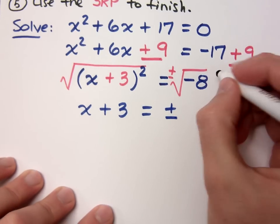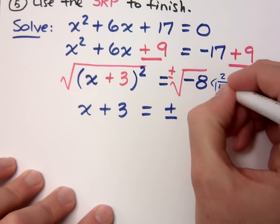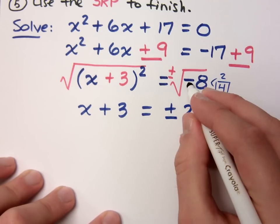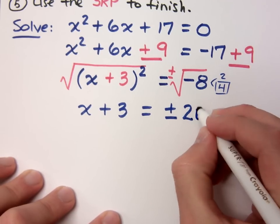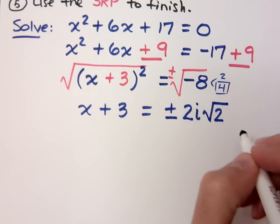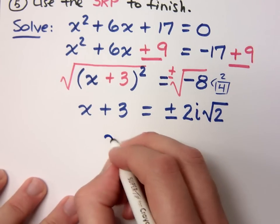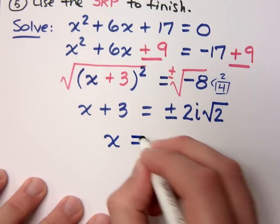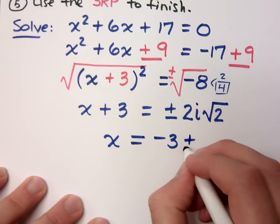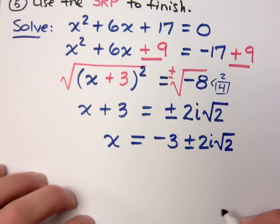Plus or minus. So that means X plus three is equal to plus or minus... How do I break down the eight? Two, i. Break down as two times four. So the four comes out as two. The negative gives me i. And what's left inside the radical? Dos. Two. How do I finish this guy? Move the three. Move the three. Where does the three go? In front of the person minus. Goes in front, so it's minus three or negative three. Plus or minus two i squared to two.